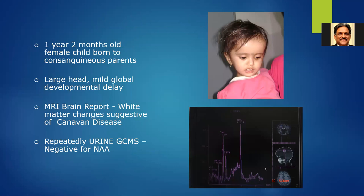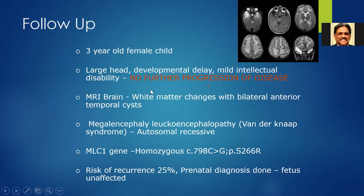A one-year, two-month-old child born to consanguineous parents with large head and mild developmental delay, initially reported as Canavan's disease on MRI outside, had a negative urine GCMS. On follow-up MRI, subcortical temporal cysts were seen, giving the diagnosis of megalencephaly leukoencephalopathy — also called Van der Knaap syndrome — an autosomal recessive disorder. Targeted gene sequencing confirmed homozygous mutations, the family was counseled with 25% recurrence risk, prenatal diagnosis was offered, and the fetus was unaffected.